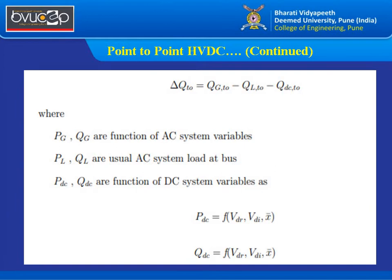The suffixes G, L, and DC stand for generator, load, and DC link respectively. PG and QG are functions of AC system variables; PL and QL are AC system variables for generator and load; and PDC and QDC are DC system variables passing through the DC link. DC power is a function of VDR, VDI, and X̄, where X̄ is the vector of DC variables. VDR is the DC voltage across the rectifier and VDI is the DC voltage across the inverter.